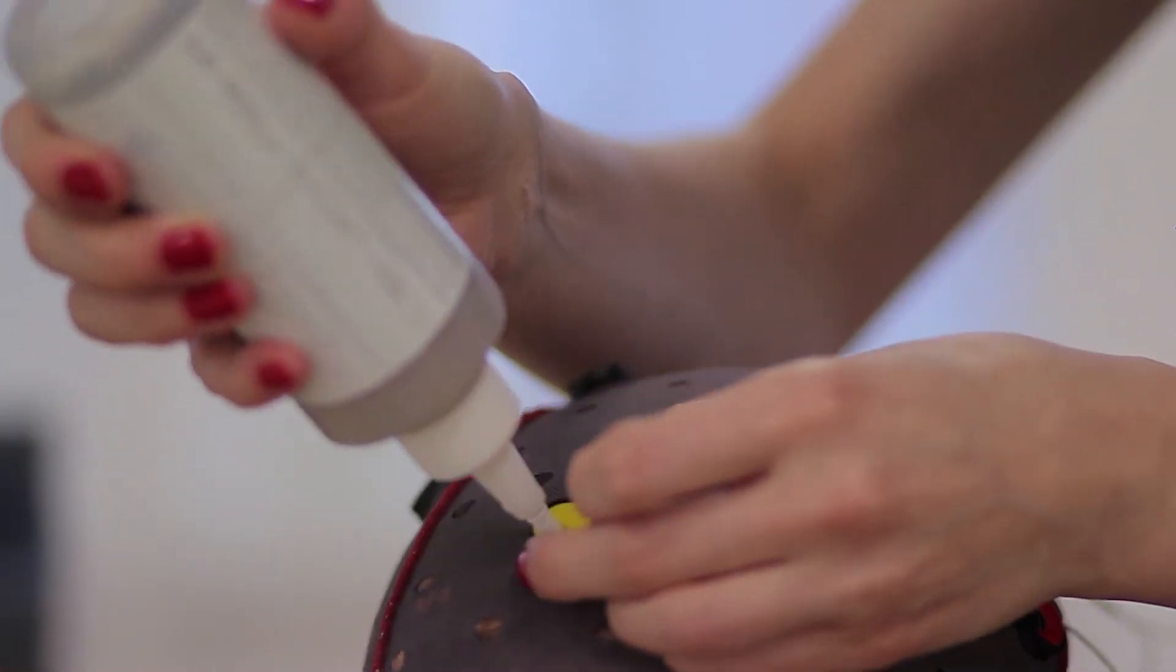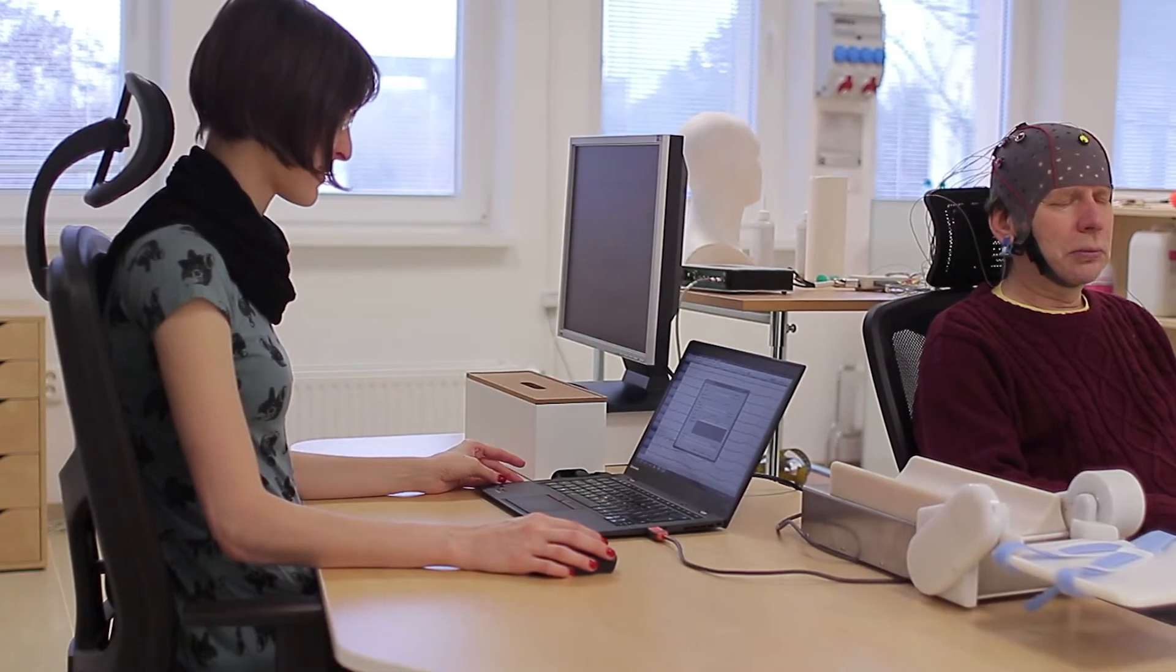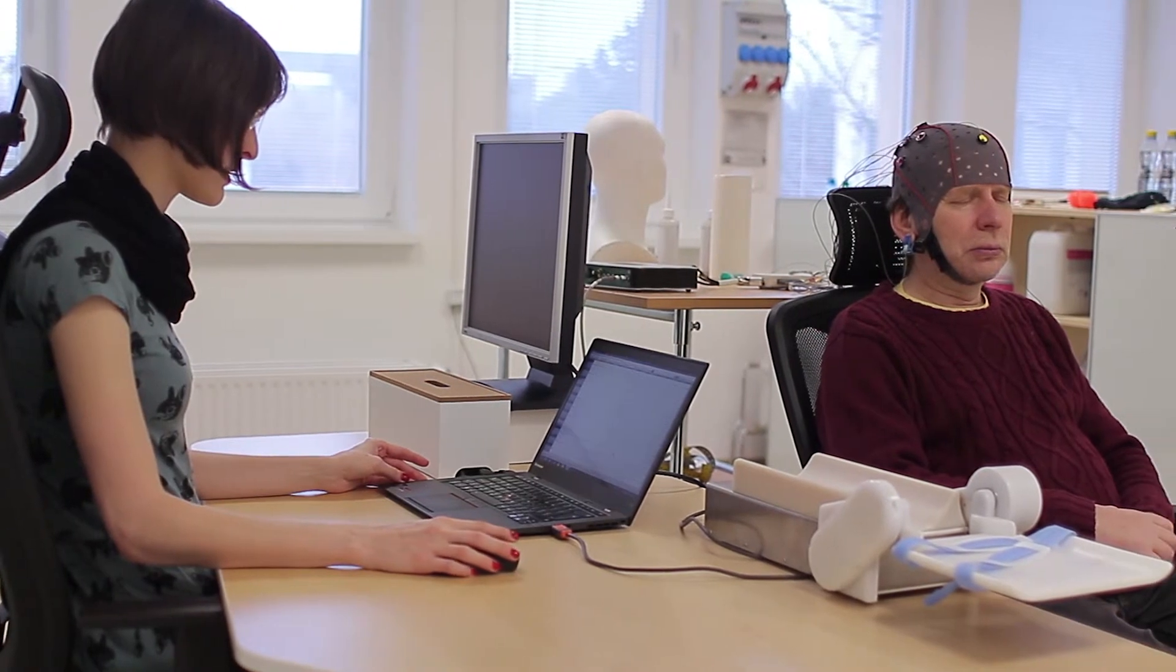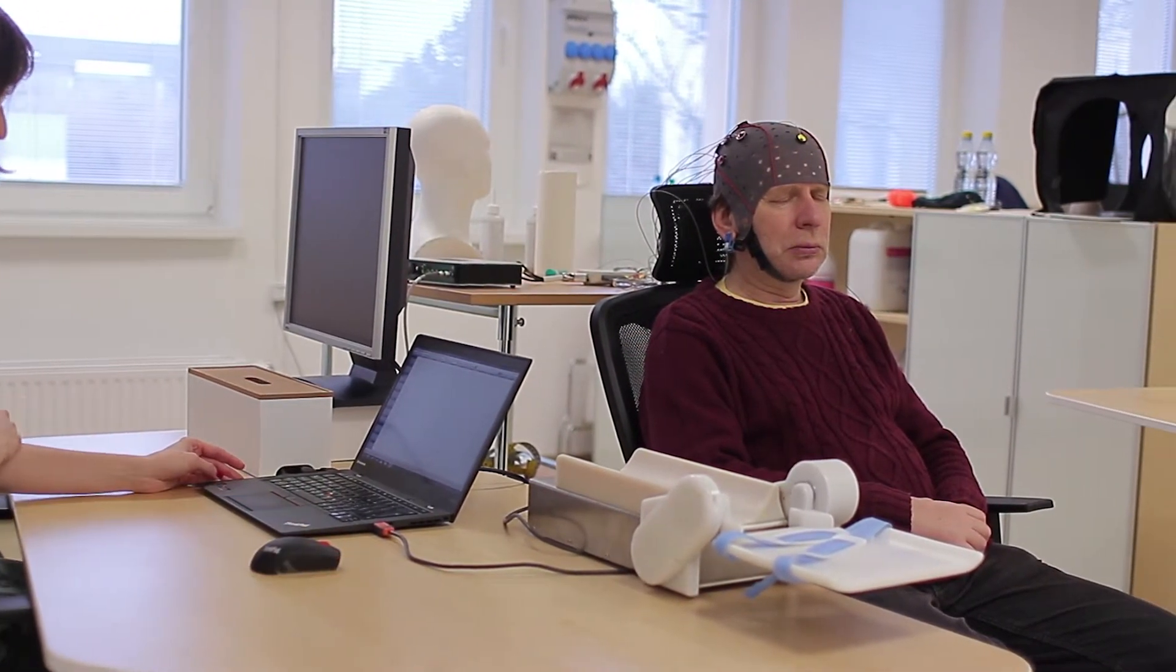After setting up the EEG cap, the electrodes are filled with a conducting gel. The acquired values of the recorded EEG signal are processed by the computer, which is connected back to the robotic splint.